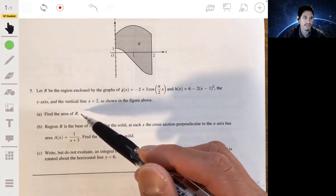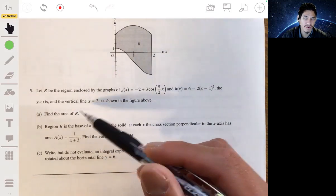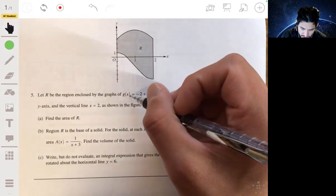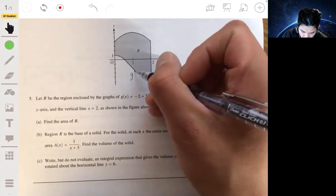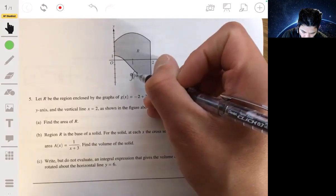Part a, find the area of r. Okay, so g(x) would then be this bottom guy. How do I know?